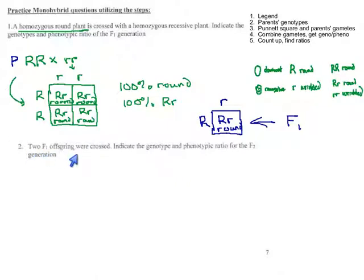They say two F1 offspring were crossed. So these pea plants produced a generation of plants that were all big R little r. And two of those plants, if they're growing side by side, will cross with each other and then we'll get an F2 generation. So these are both F1s. They're both the kids from the first part, and we're crossing them with each other. Getting back to our steps - legend: we're talking about the same kind of pea plants, so the same legend will still work here. Parents phenotypes: got them. They're both F1 generation, and we know that every single one of those plants has to be big R little r and produce round peas.